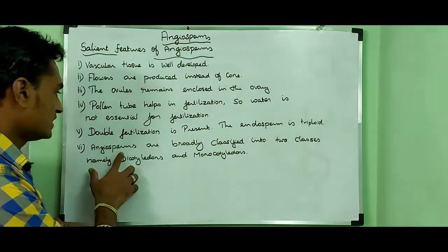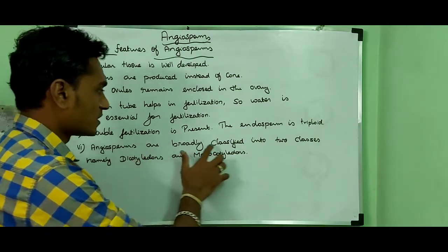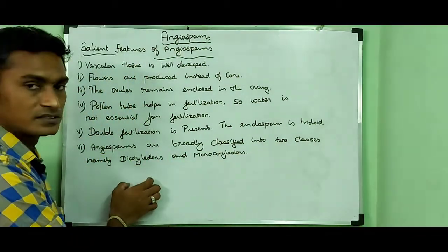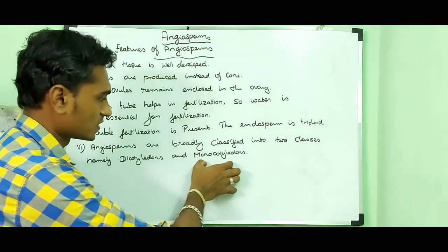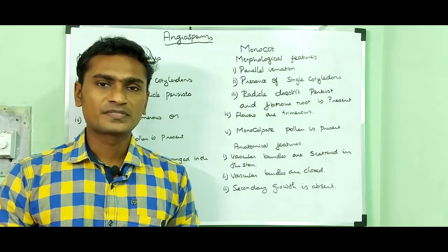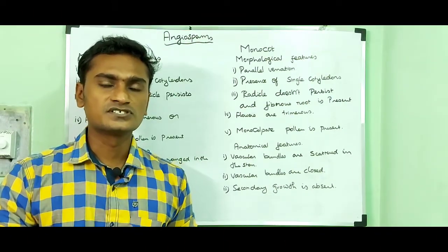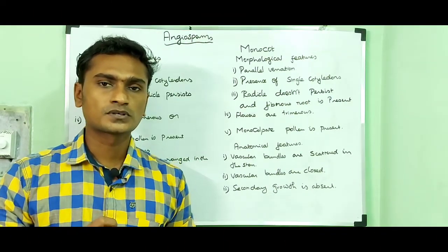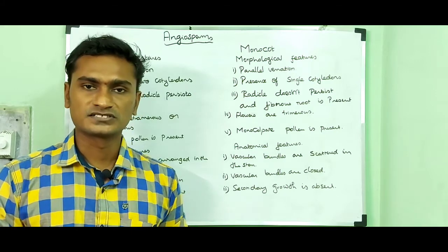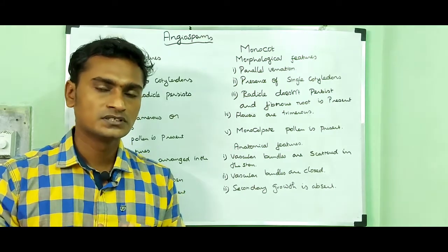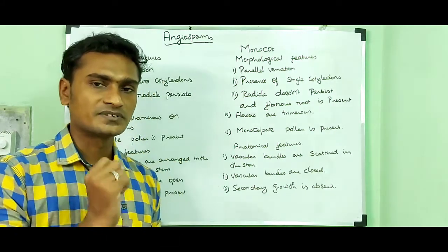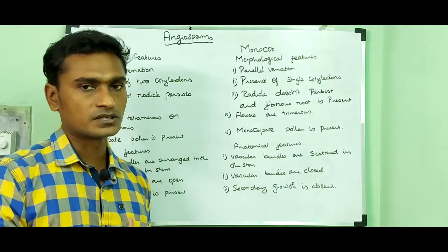Angiosperms are broadly classified into two classes, namely dicotyledons and monocotyledons. Let me teach you the characteristic features of monocot and dicot plants, starting with their morphological features.